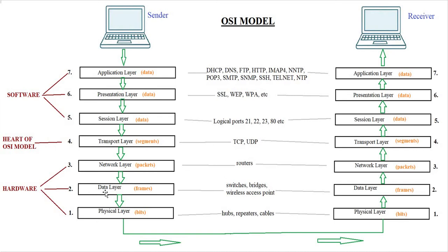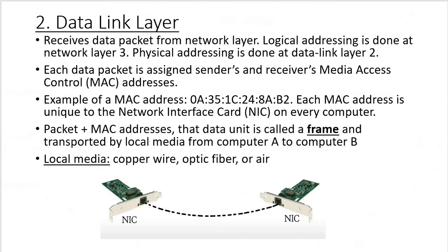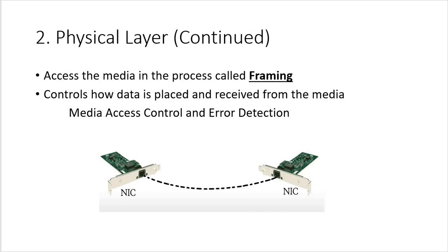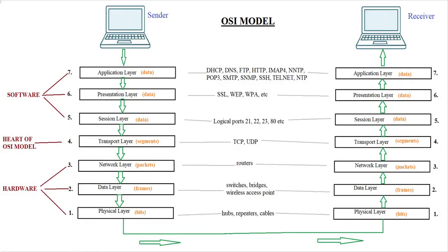Once the Network layer is done, it sends the packet down to the Data Link layer. The Data Link layer receives the packet and adds the MAC (Media Access Control) address of both the sending and receiving computers. A MAC address is 12 characters of letters and digits, and every network interface card in the world has a unique MAC address. Once both MAC addresses are added, the unit is now called a frame. The Data Link layer also performs framing, media access control, and error detection.